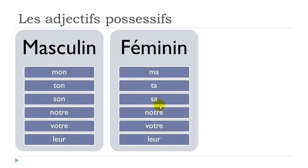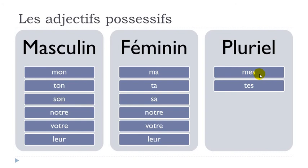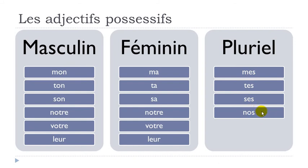The only difference is MON/MA, TON/TA, SON/SA. Now let's see the plural part. For the phonetical or pronunciation aspect, remember that the ES here combined gives you the sound A. So you pronounce it: MES, TES, SES. And then for the plural: NOS, VOS, and LEUR.